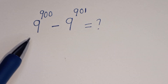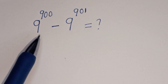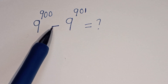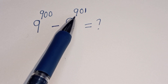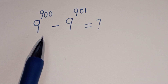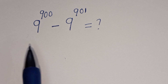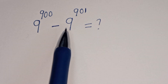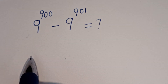Hello. How to simplify this smart problem without using a calculator: 9 to the power of 900 minus 9 to the power of 901. If you want to simplify this problem without using a calculator, please don't forget to like, share, comment, and subscribe to my channel.